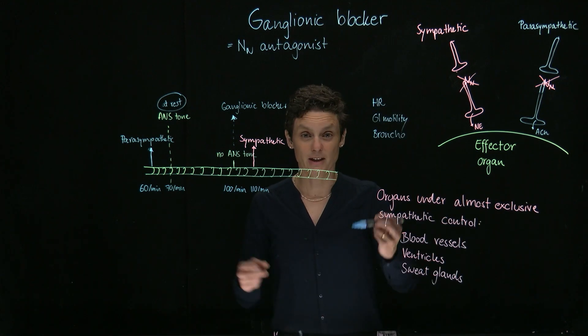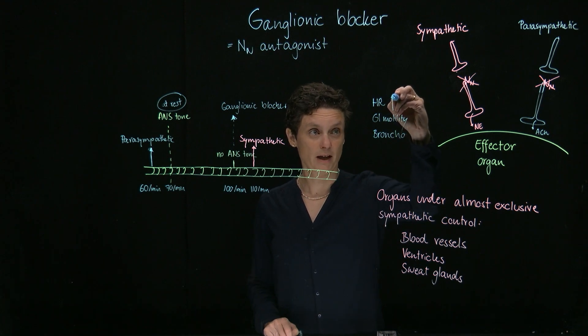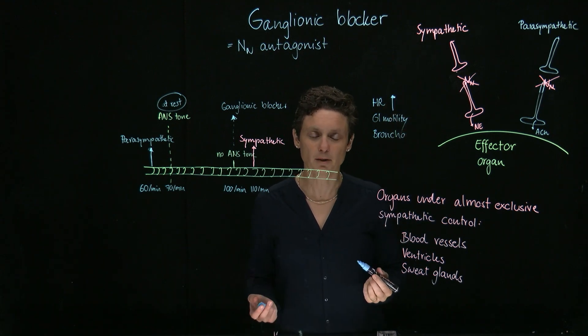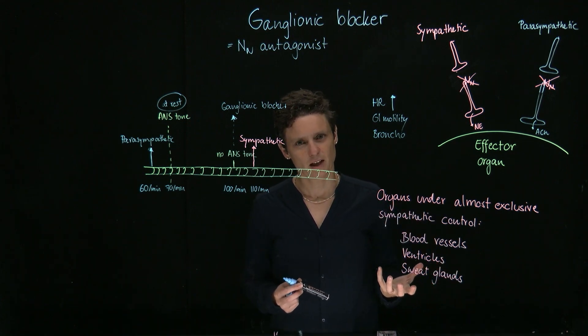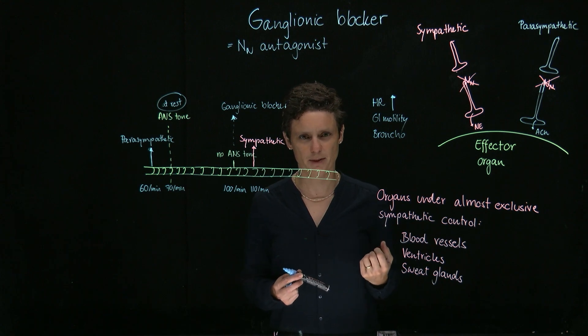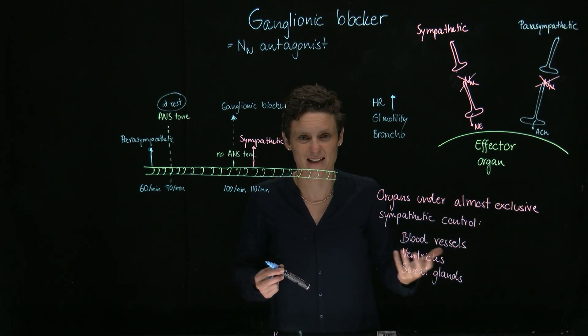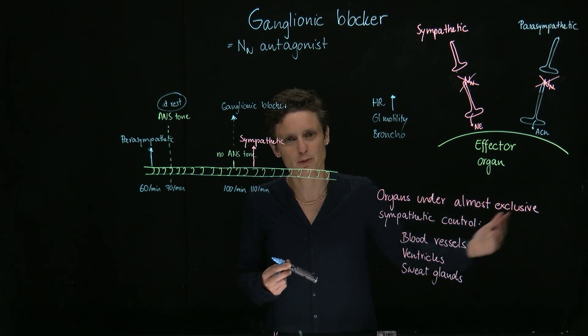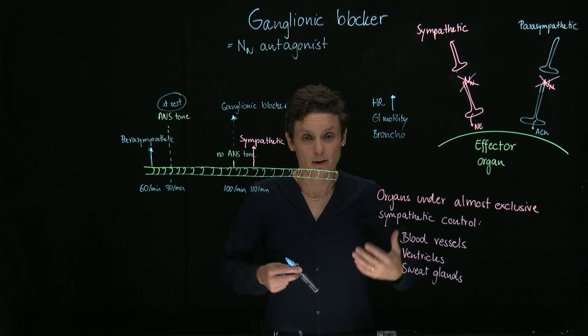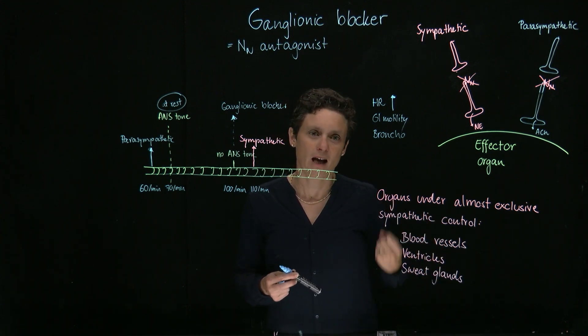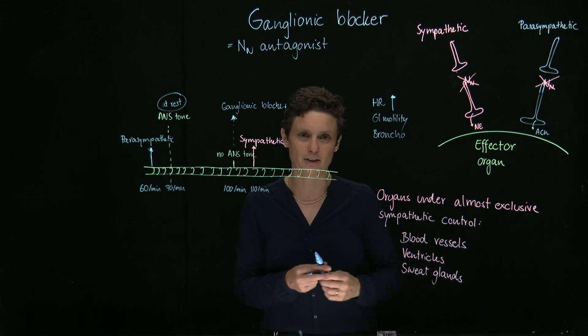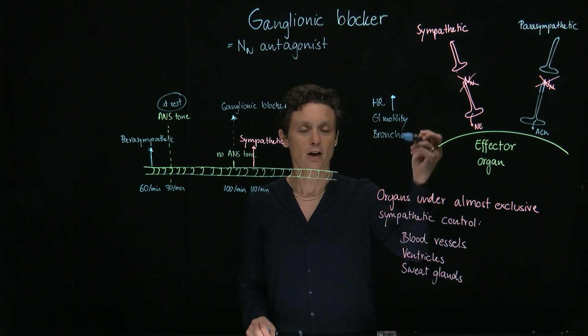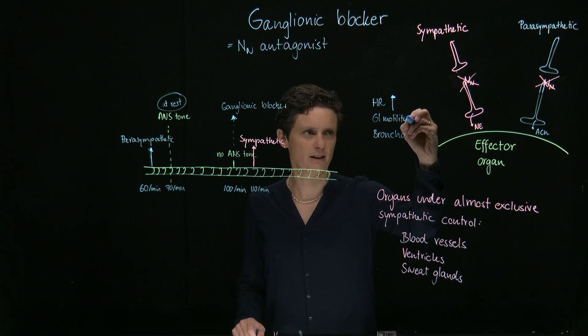So we already mentioned heart rate is going to go up compared to at rest. Let's think about a couple of other examples. What's going to happen to GI motility? GI motility is increased by the parasympathetic nervous system, rest and digest. There's a little bit of input of the sympathetic relaxing GI motility, but the winner is increased GI motility. So with a ganglionic blocker, we're going to have the opposite, and therefore, relaxation of GI motility.